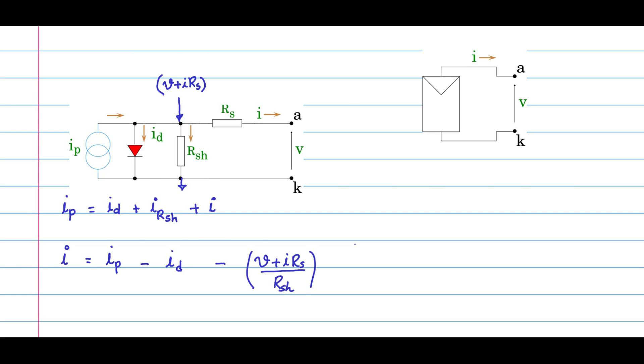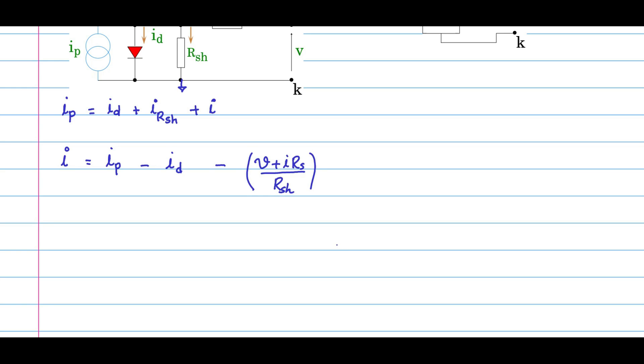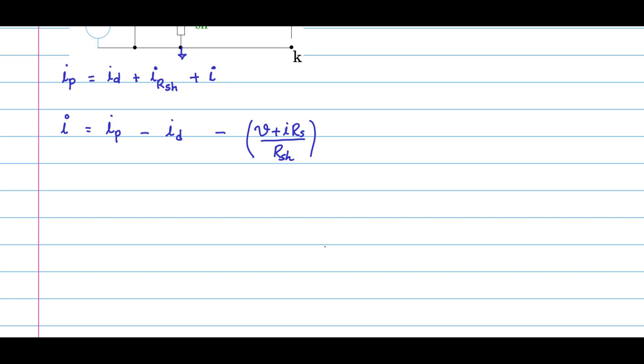Now the diode current. We know from the p-n junction theory it can be written as I_naught, which is the reverse saturation current, times e to the power of (voltage across the diode, which is nothing but V plus I*R_s) by an ideality factor n into V_T, minus 1. So this is the equation, the current equation for the diode, and it comes from the p-n junction theory which you will find in any electronics p-n junction chapter.